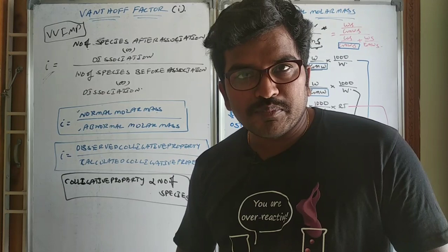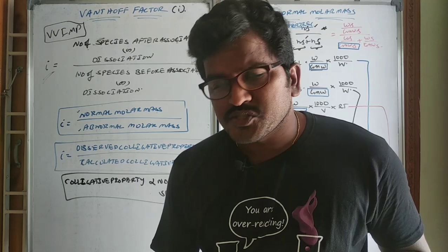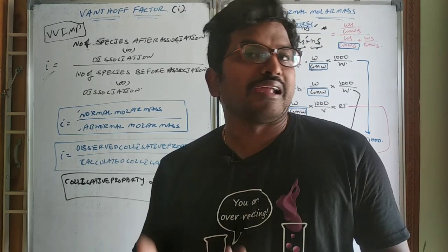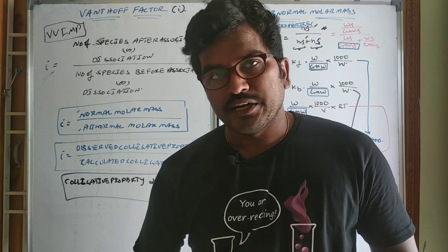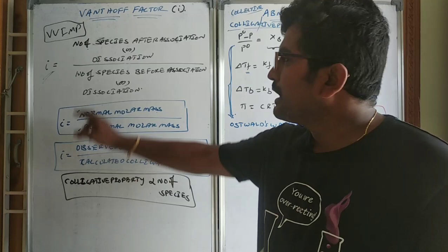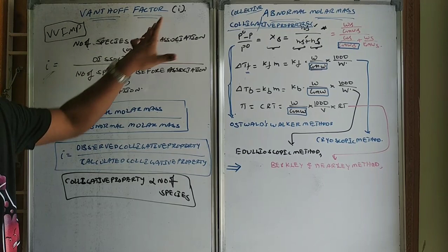For example, when benzoic acid is dissolved in water, its molar mass is observed as x — what is the Van't Hoff factor? Or when potassium ferrocyanide is dissolved in water, the colligative property observed was y — what is the Van't Hoff factor? They may give the Van't Hoff factor and ask for the colligative property. Like this we can understand the Van't Hoff factor.